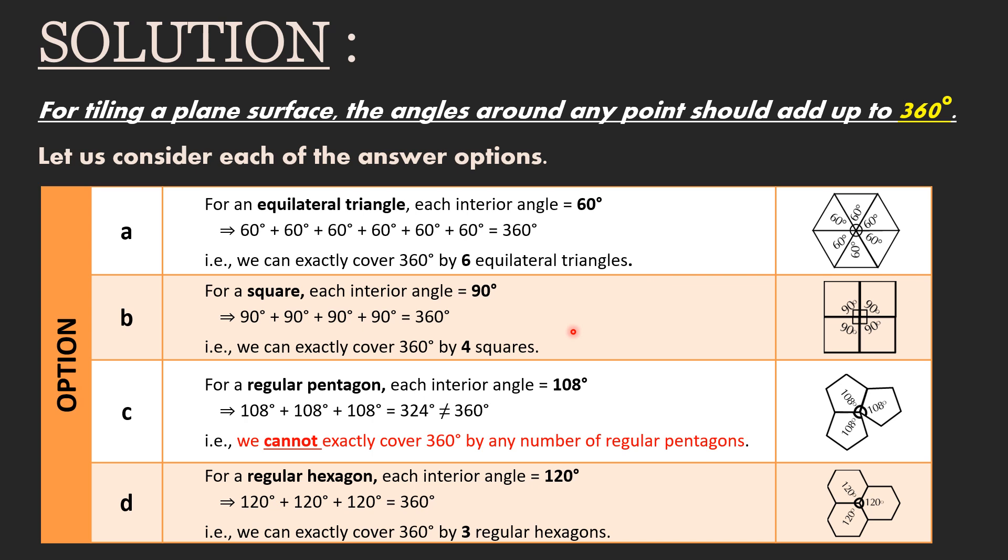Next, let us consider option B. For a square, each interior angle equals 90 degrees. 4 times 90 degrees equals 360 degrees. That is, we can exactly cover 360 degrees by 4 squares.